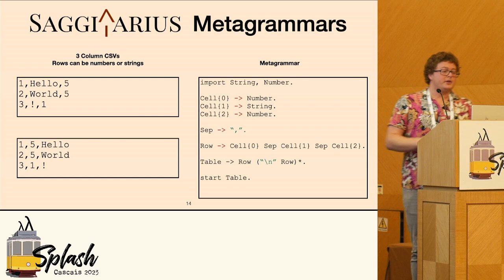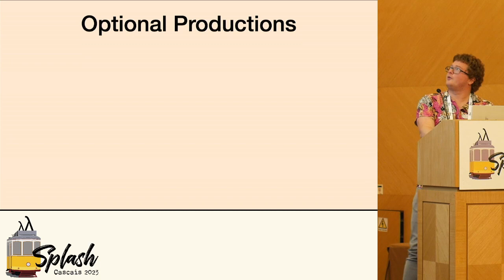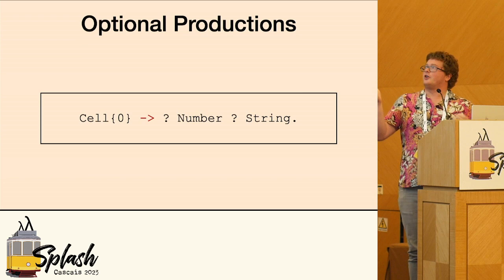So we need some sort of a way of describing multiple grammars. This is done with optional productions, which is expressed using question marks. We can say that cell zero can have a production to number, and it can also have a production to string. So we add these in.